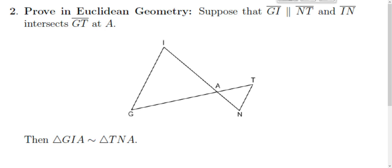We suppose that GI is parallel to NT, and IN intersects GT at A. And we prove that triangle GIA is similar to triangle TNA. And this is not terribly difficult, so we suppose all of this stuff.